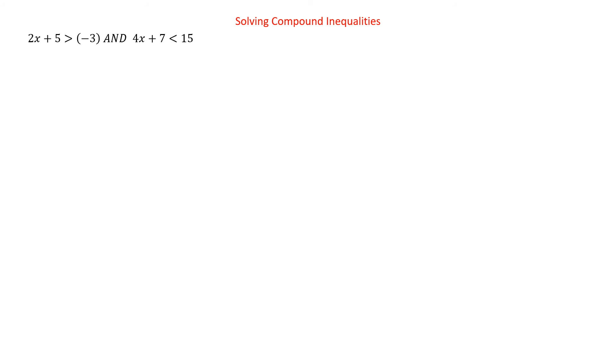Now let's take a look at some AND situations. So we have two x plus five is greater than negative three, and four x plus seven is less than 15. The solving process is the same — that's not changing. And it's the same as with equations. So even though we're working on inequalities now, we're still practicing those solving equation skills too. It's kind of nice and convenient.